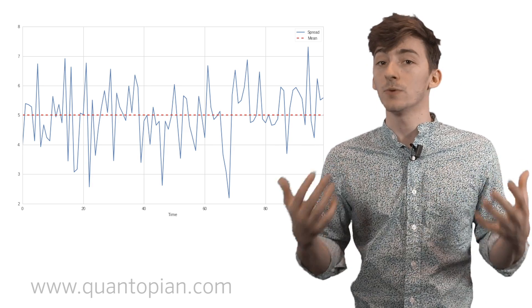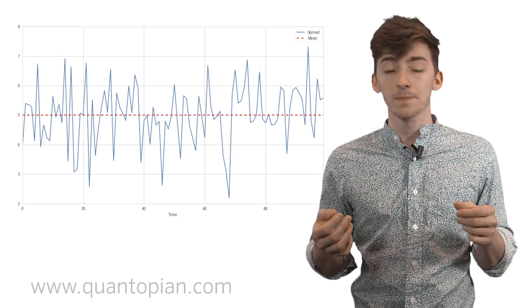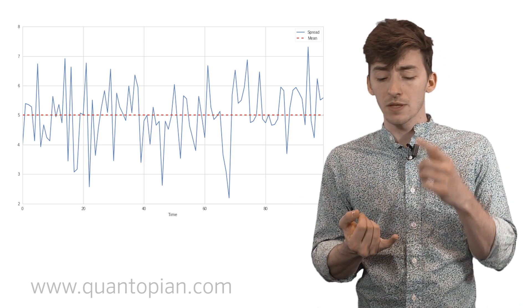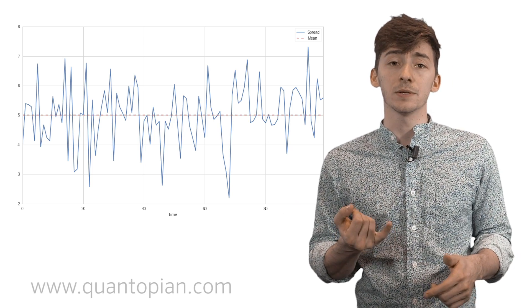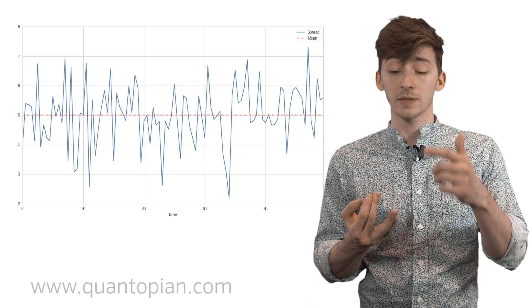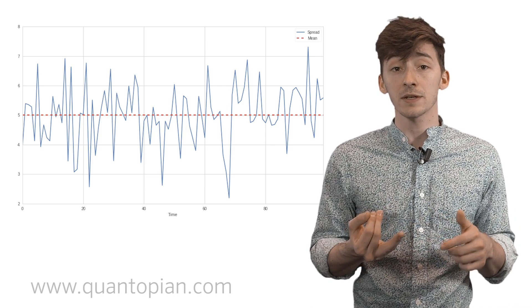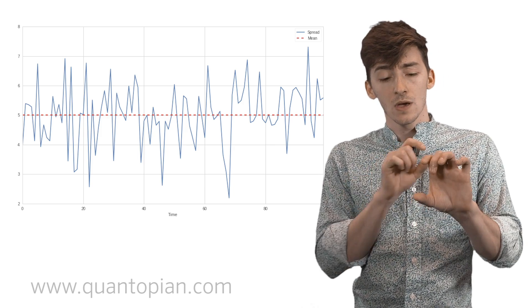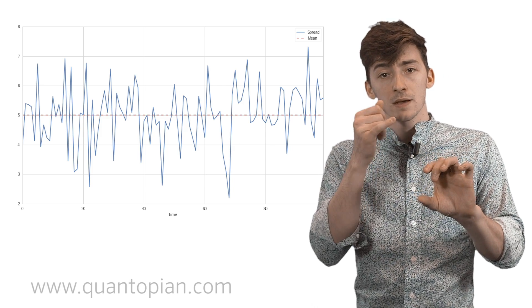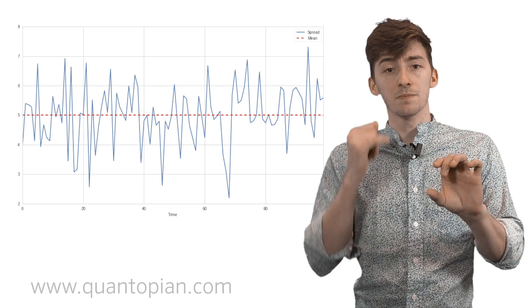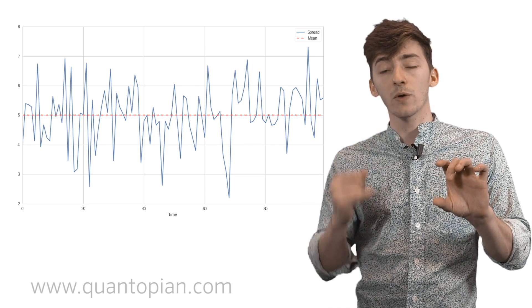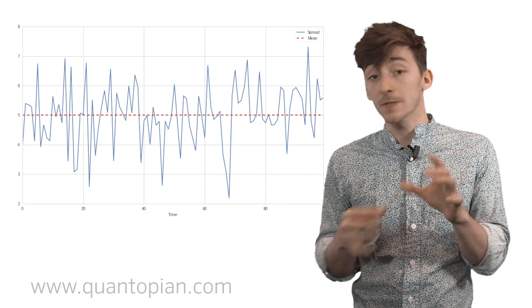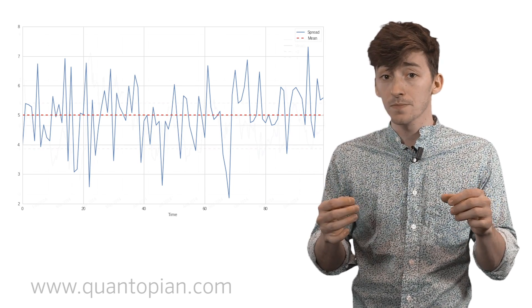Explaining this noise away with this noise gives us something that we can then estimate the parameters of. Let's say that it's a normal distribution. Once we get this stationary time series, we can figure out what the mean and standard deviation of that time series are, and then based on these values, we can make positions based on where we are in relation to the mean — because this is a mean reversion strategy.